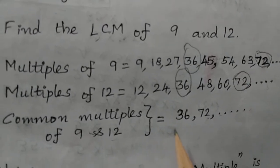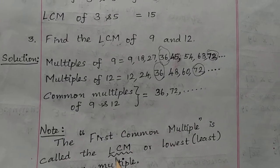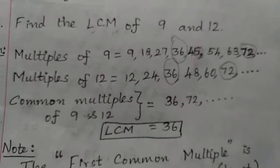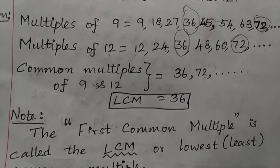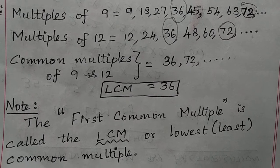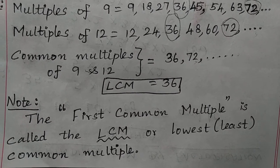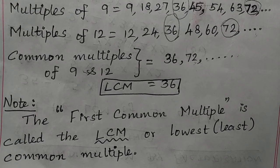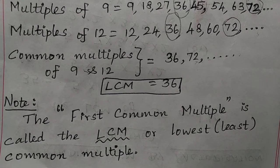The smallest value of common multiples of 9 and 12 is 36. So LCM = 36. Note: the first common multiple is called the LCM or lowest common multiple or least common multiple. First common multiple, smallest common multiple, least common multiple, and lowest common multiple are all the same.